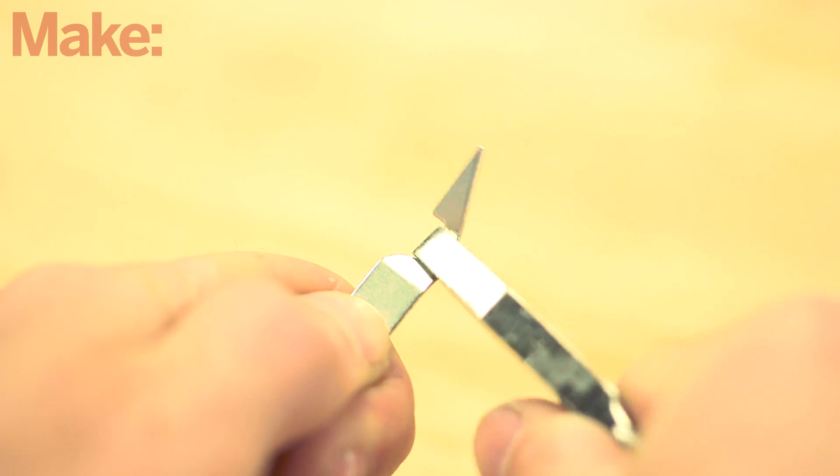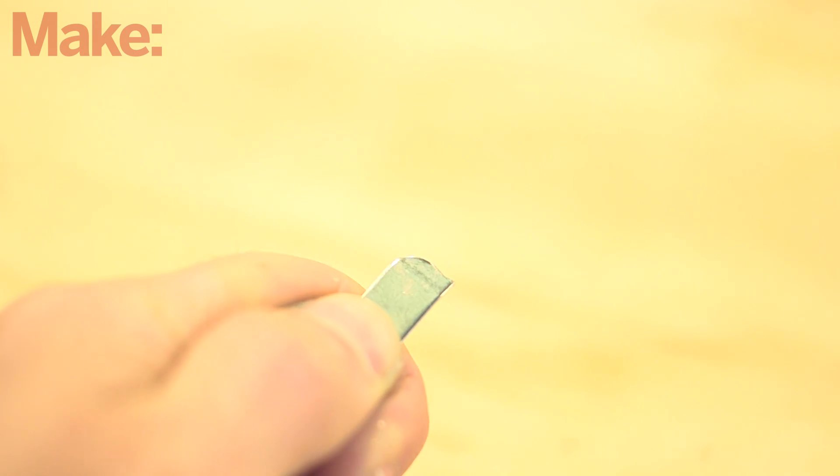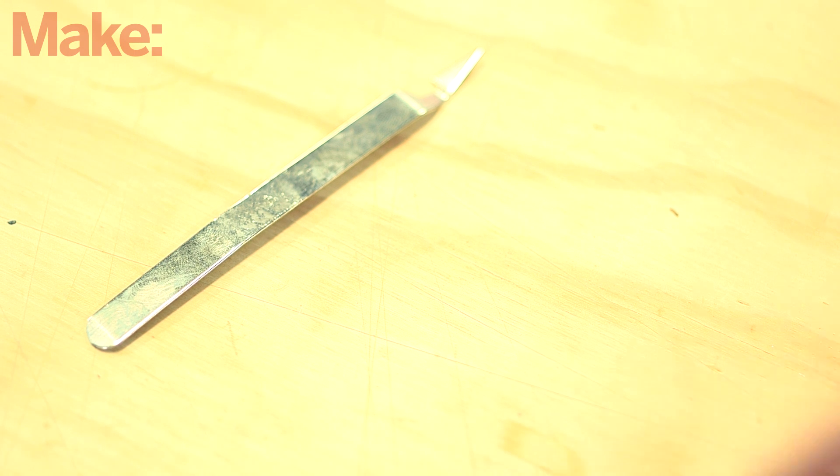Grab one of the two jaws with a pair of pliers right where it thickens into the handle and bend it back and forth until it breaks. Smooth and round the broken edge with the file. Repeat this process with the second heat sink to create the second jaw of the tweezers.